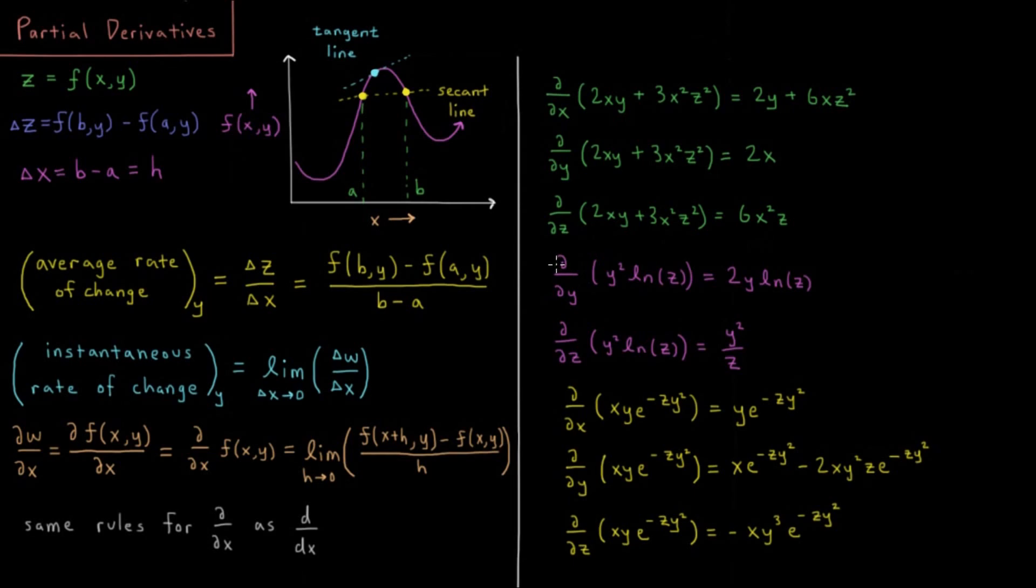Other types of functions: partial derivative with respect to y of y squared log z—derivative of y squared is 2y, log z is constant, so there we go. Or with respect to z, where y squared is constant and derivative of log z is 1 over z, giving us y squared over z.